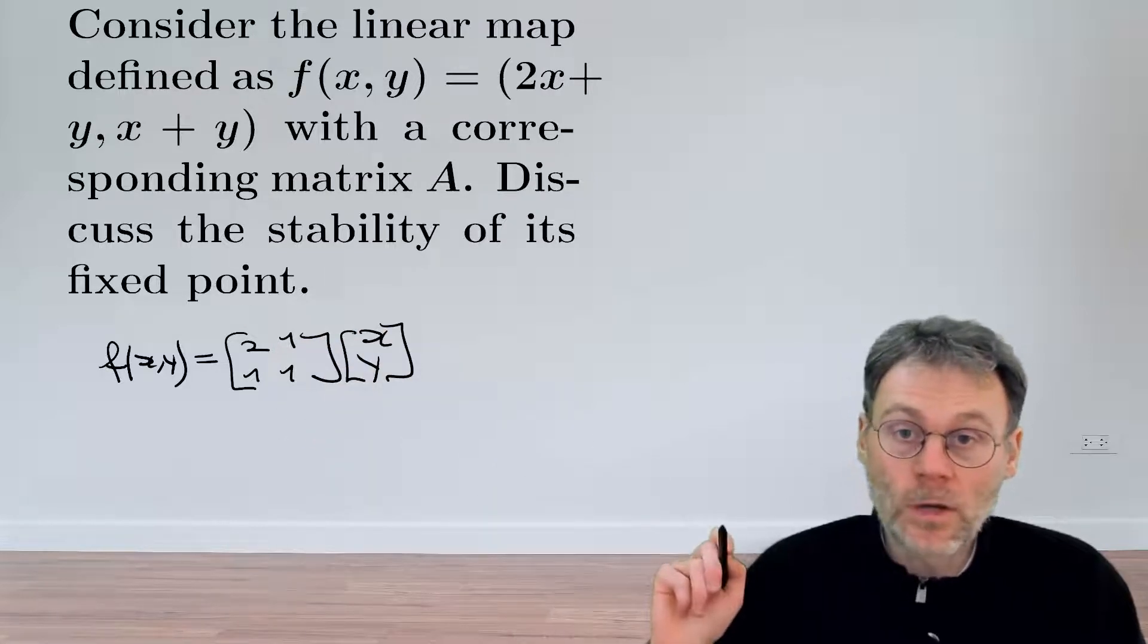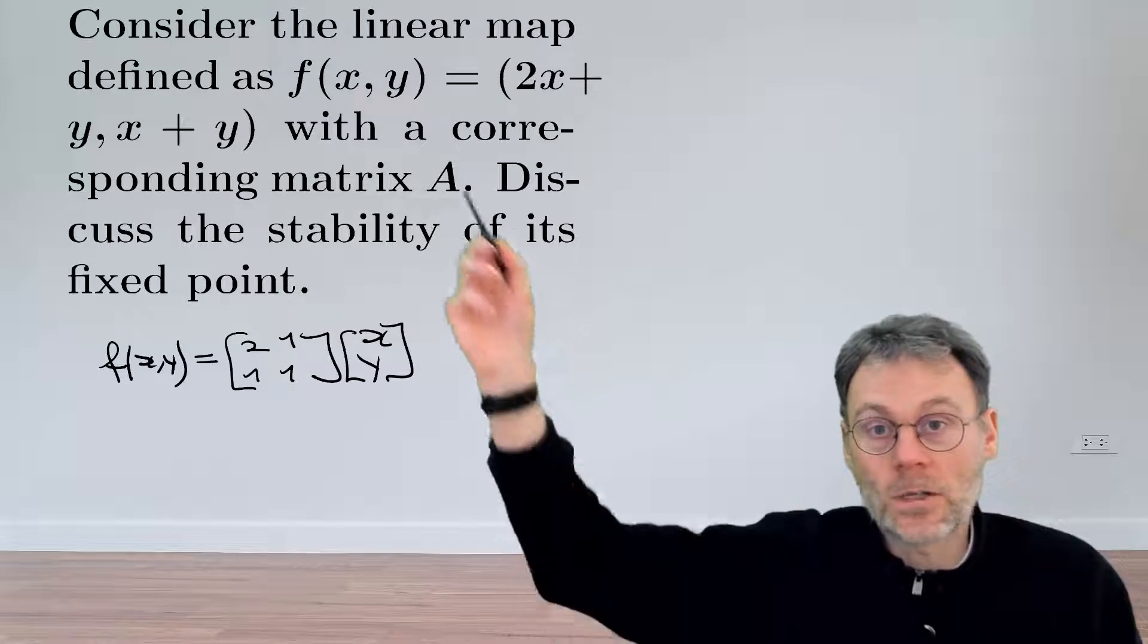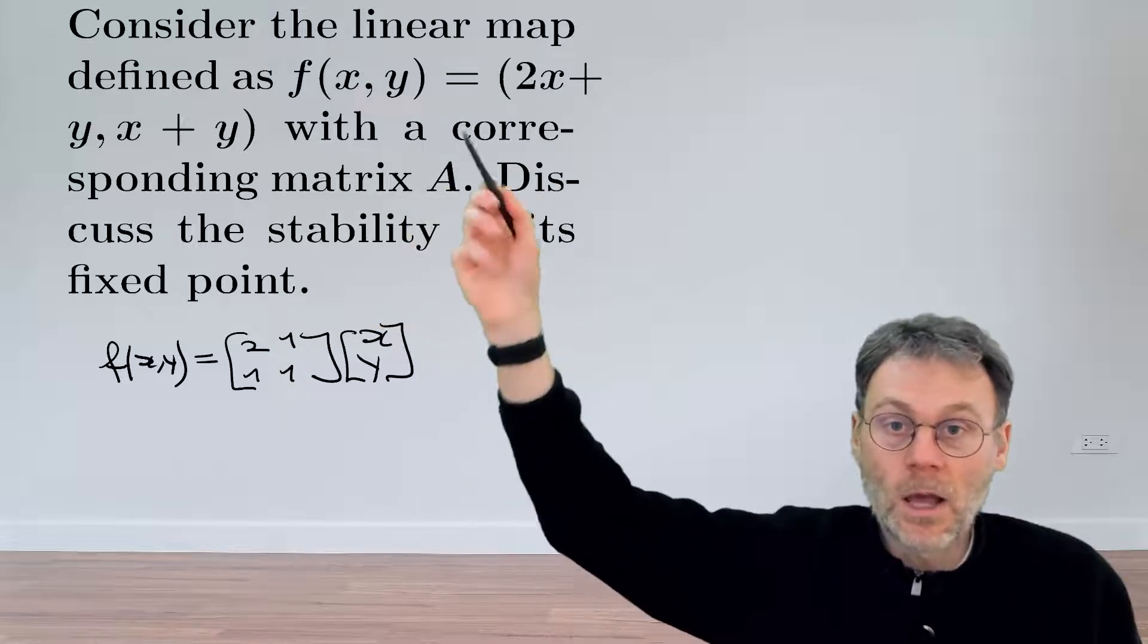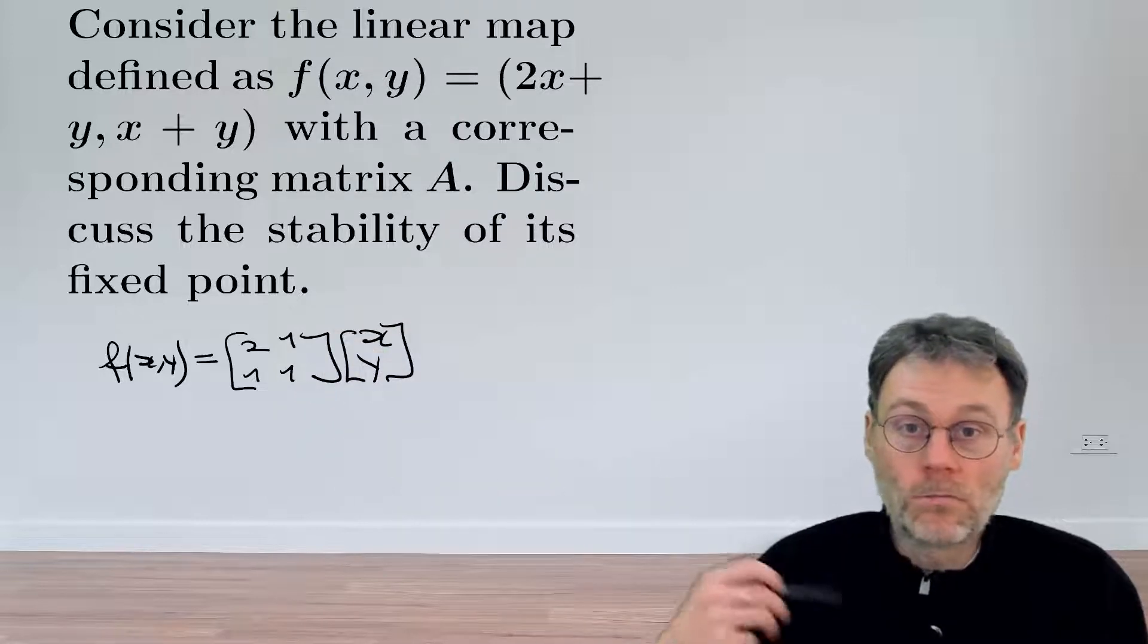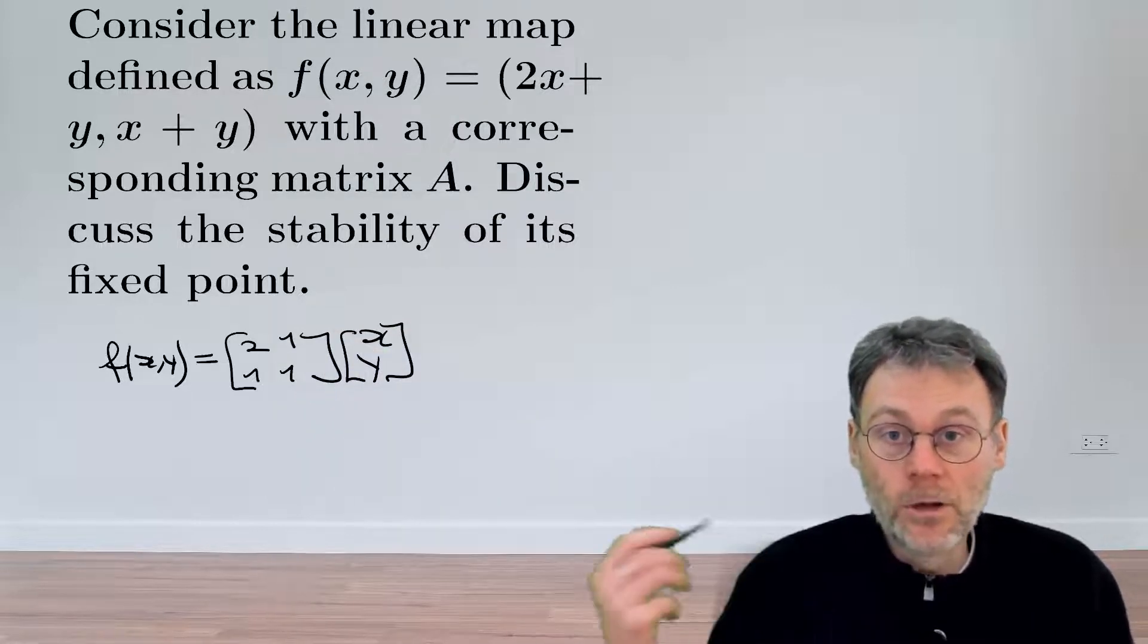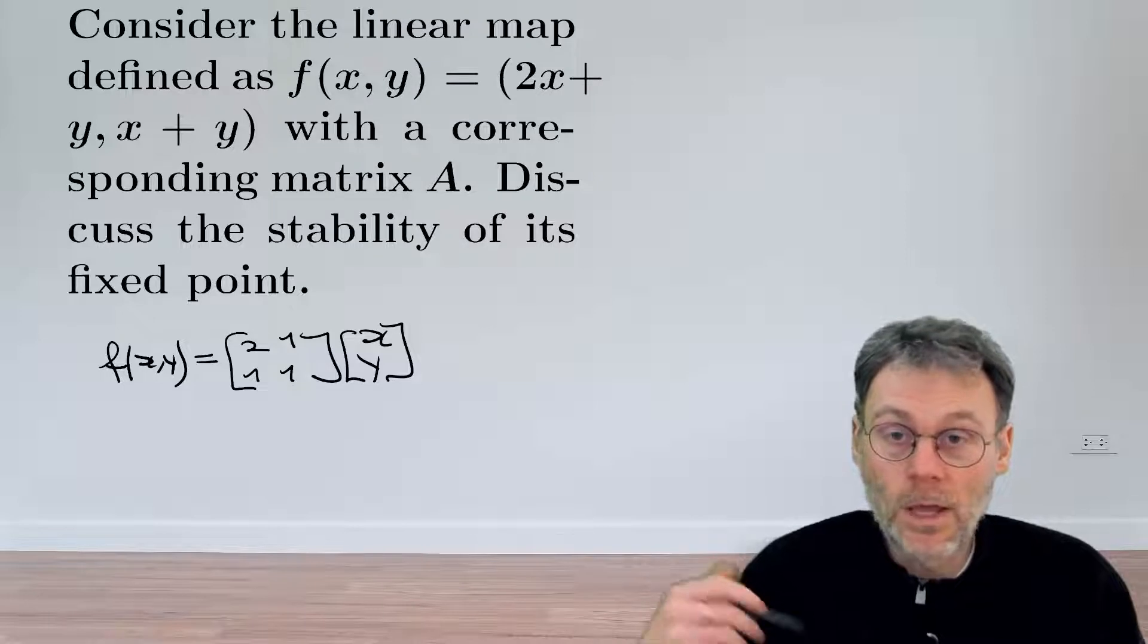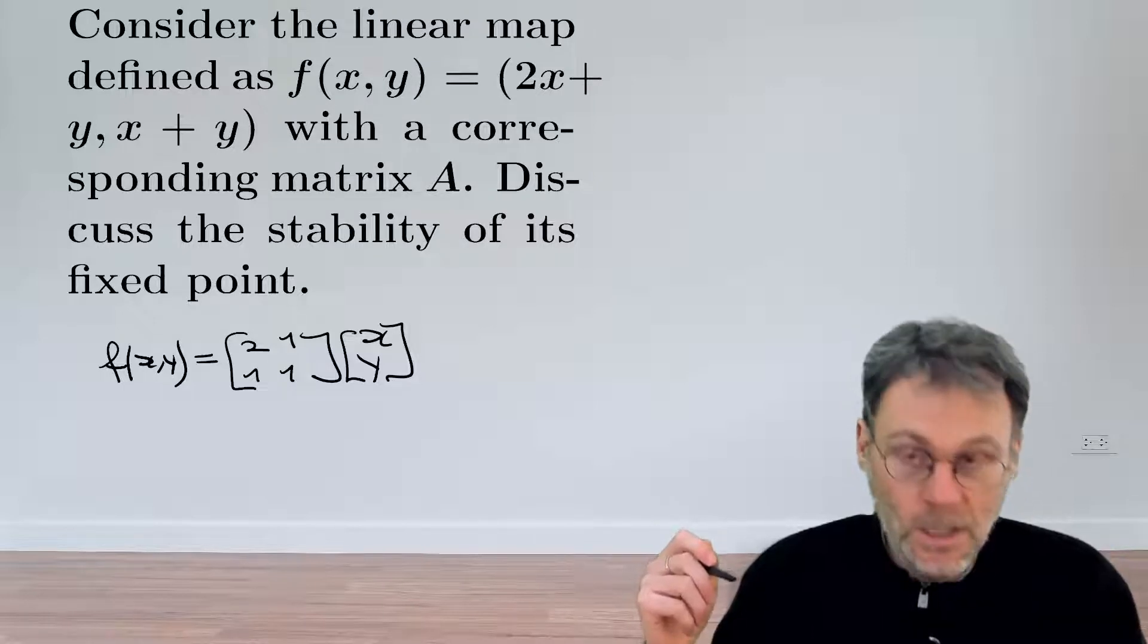By the way, if you were to calculate the Jacobian matrix of this map here by taking partial derivatives, you would end up with exactly the same matrix, which makes a lot of sense because the linear approximation to a linear map is that map itself. So nothing surprising here.